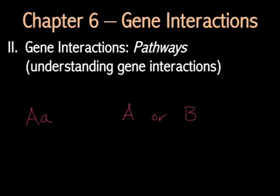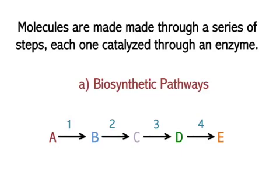So if you have gene A or B, how could they influence each other to affect the phenotype of the organism? We're going to be asking ourselves: do they interact, and then how do they interact? You may be asking yourself how it is that two different genes can interact to affect the same phenotype. Well, just remember that our phenotypes are heavily determined by the molecules we make.